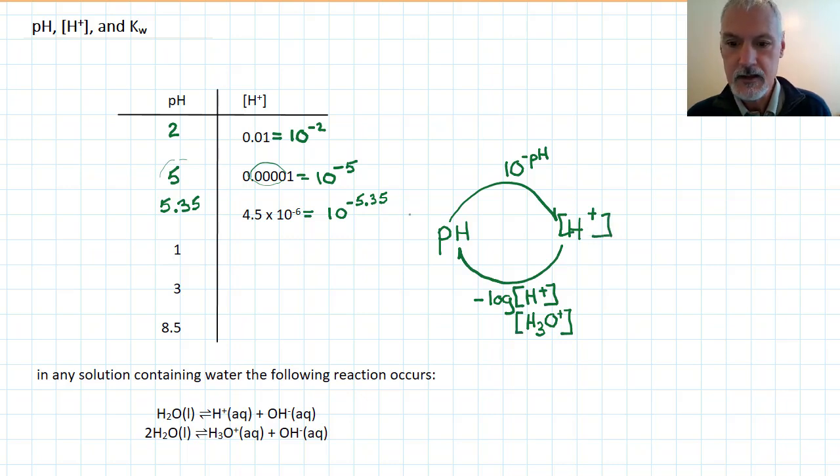Going the other way, all I need to do is take pH and raise it as the power exponent of 10. So this would become 10 to the minus 1, this would become 10 to the minus 3, and this would become 10 to the minus 8.5. And if you wished, you could then turn that into a number using your calculator. It's the same as 3.1 times 10 to the minus 9.